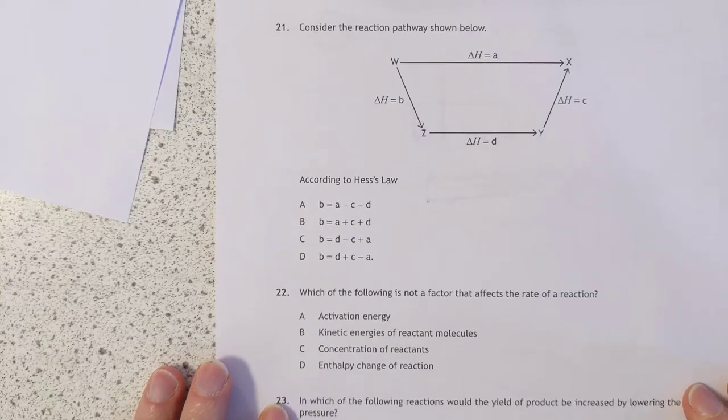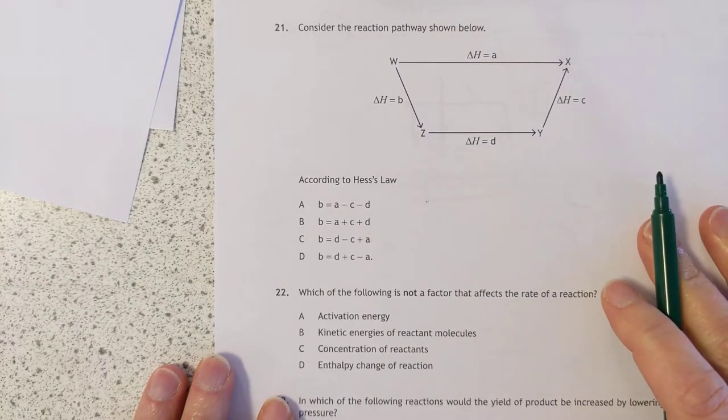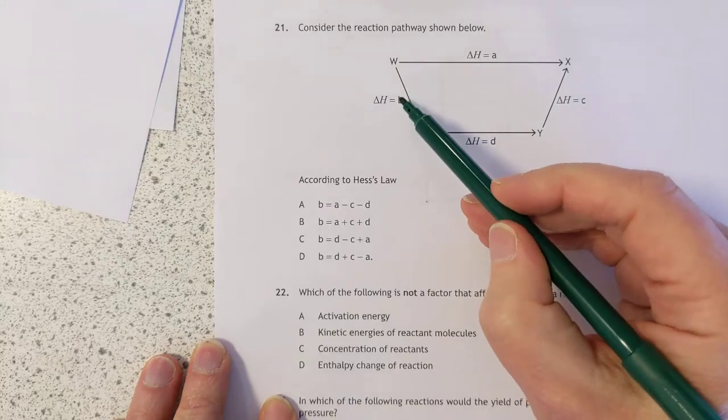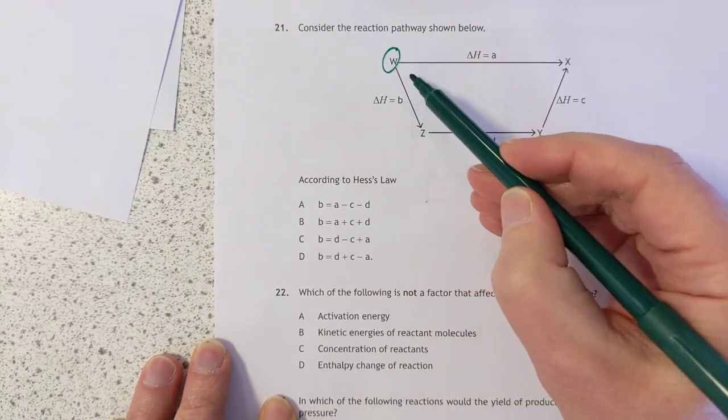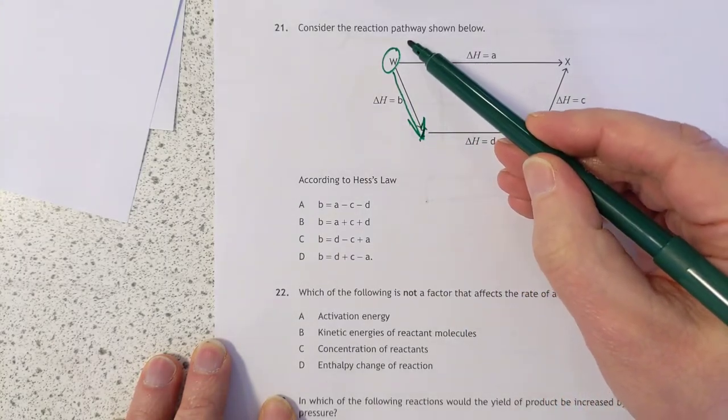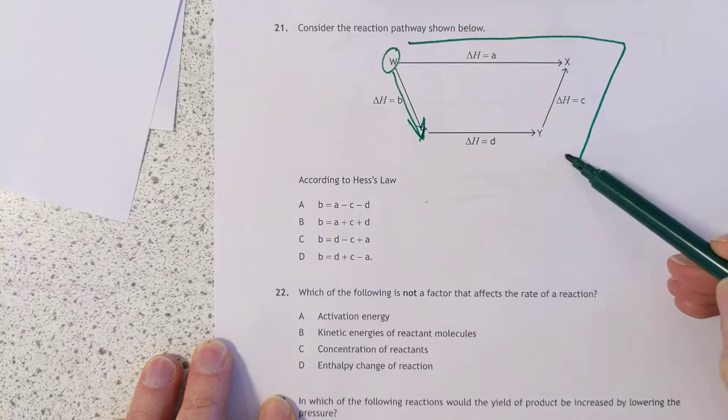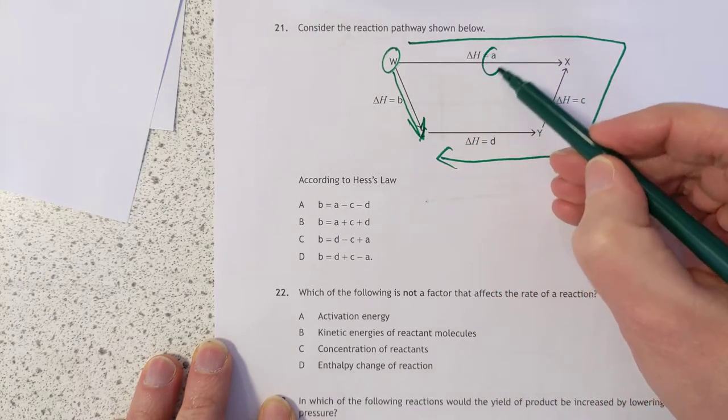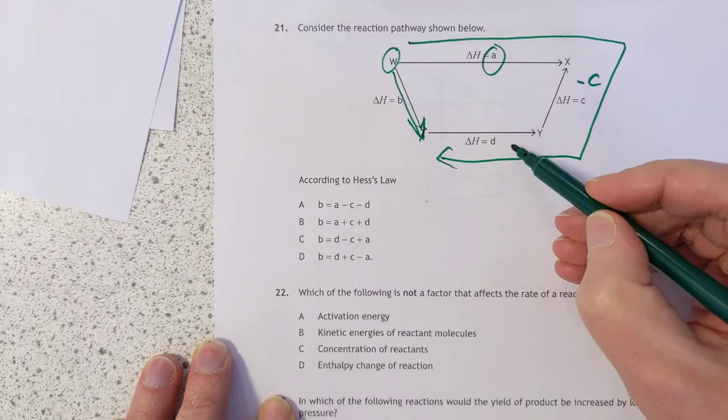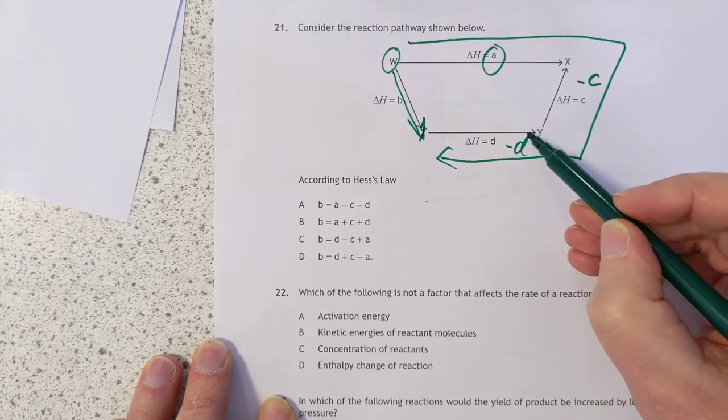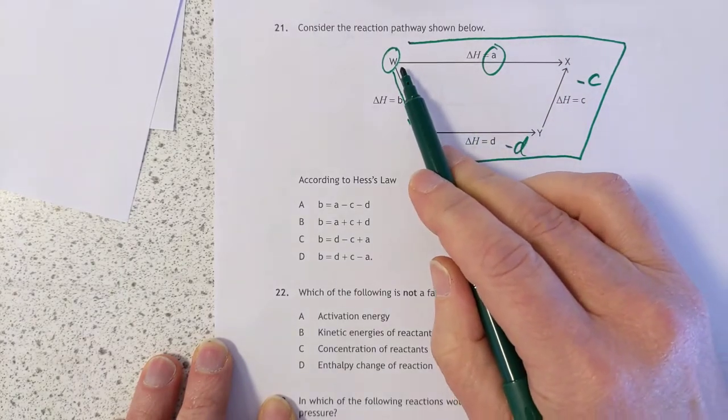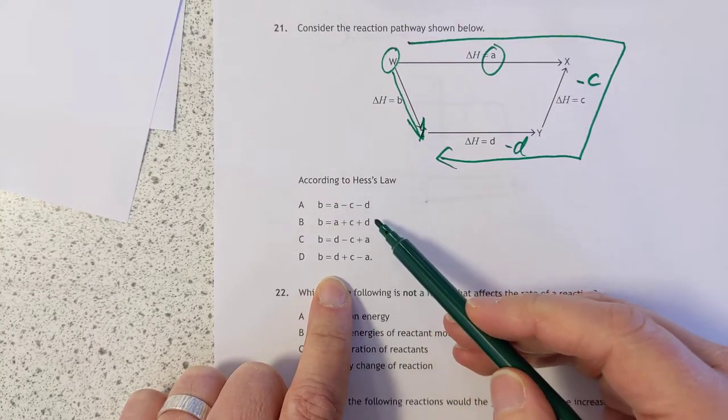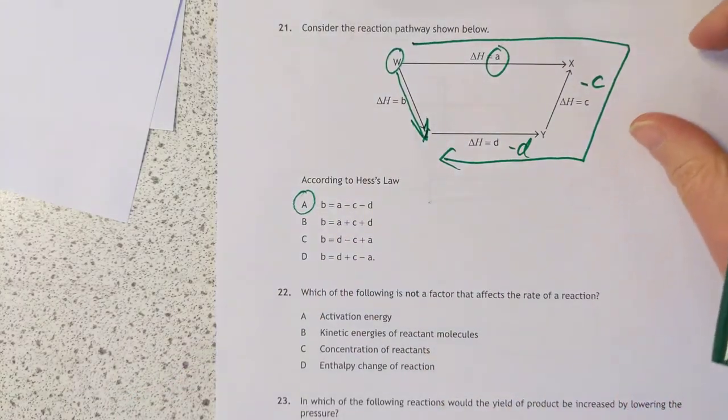Question 21: Consider the reaction pathway shown below. According to Hess's Law. They're all starting with B, so we're effectively going from W to Z. That's the route. And we're going with the alternative route, which is round this way. So we're going along here, we're going against this one and we're going against this one. So we're going to take A fine, leave it as it is. This will have to be negative C, this will have to be negative D, because the original arrows for D and C are going the opposite way to what we want to go, whereas this arrow here was going with us. A minus C minus D. There we go.